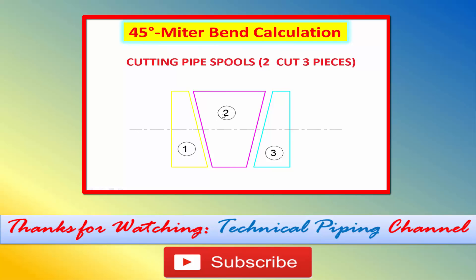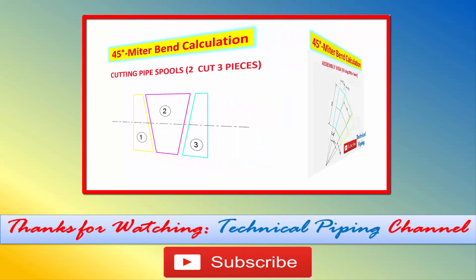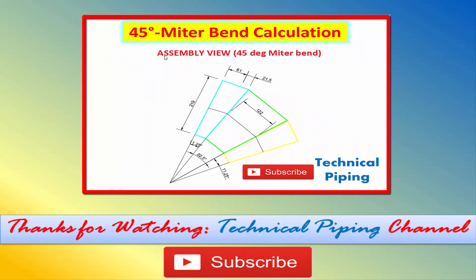Cut the spools from pipe and make bevel angle. Now assemble all three spool pieces as shown in the picture. Give proper gap for welding and put tack weld at required places.